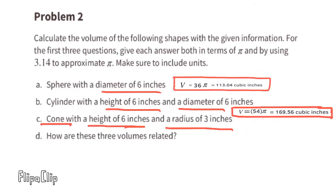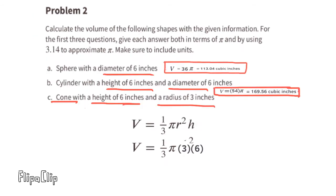C. Cone with a height of 6 inches and a radius of 3 inches. Using the formula to find the volume of a cone, we can substitute the R with 3 and substitute the H with 6. 3 squared, or 3 times 3 is 9, and 9 times 6 is 54.